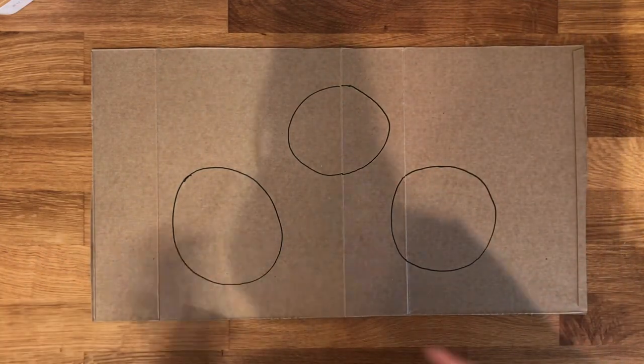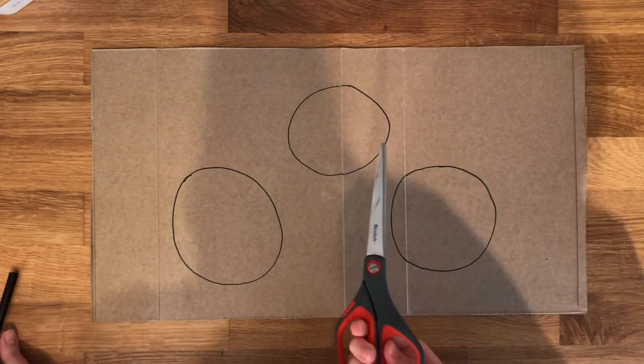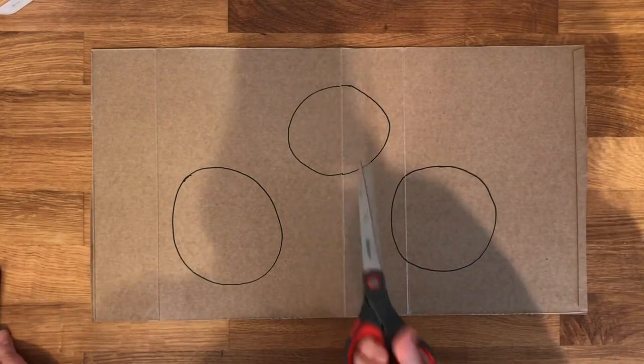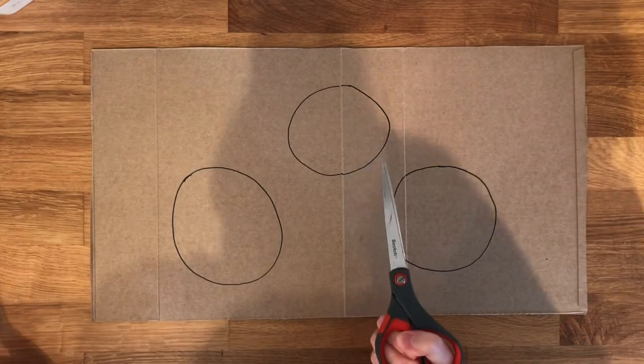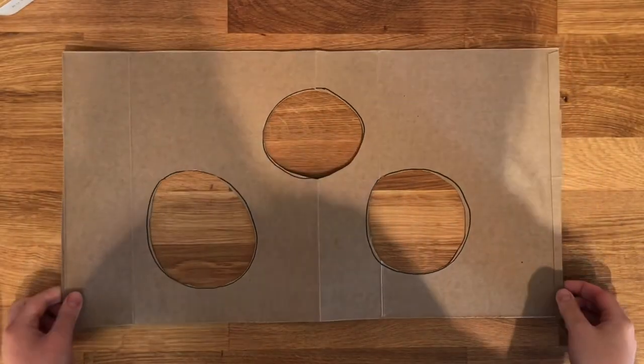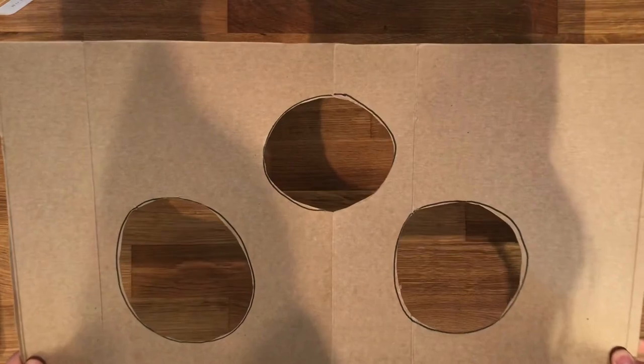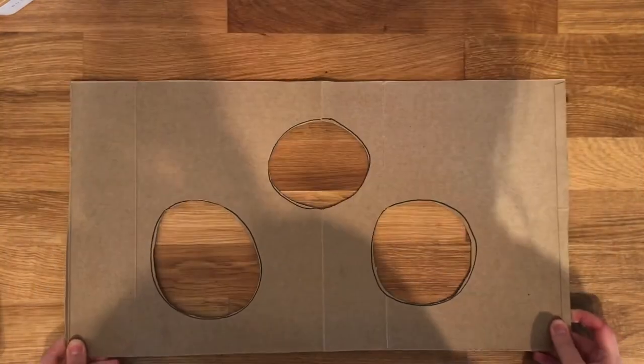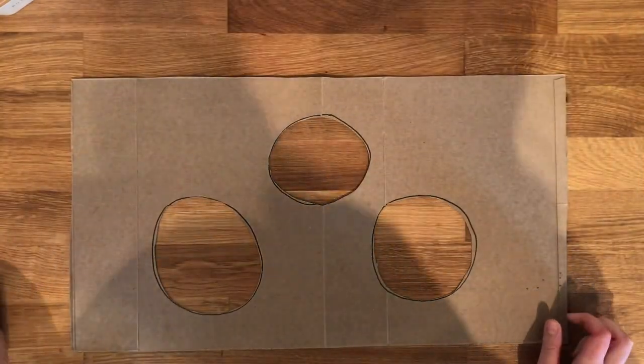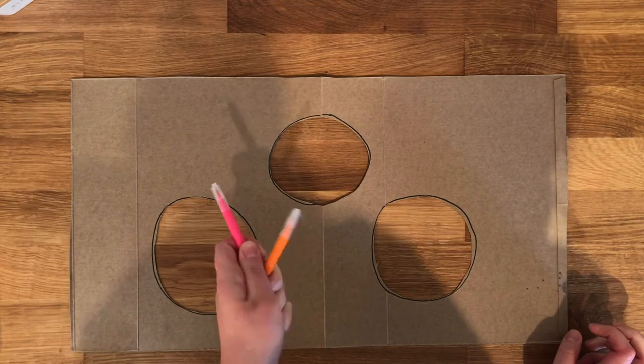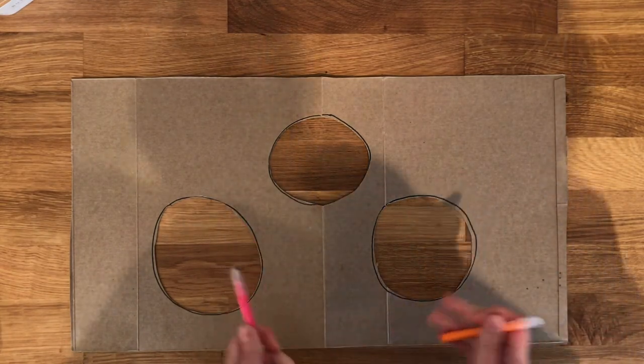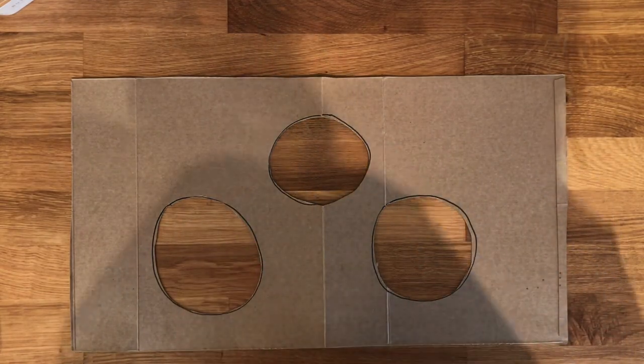So once you've drawn the circles, you can carefully cut them out. You can get a parent to help you with this part if it's a little tough. Now once you've drawn the circles and cut them out, you're ready to decorate. I'm going to be using markers to decorate mine. But you can definitely use paints, colored pencils, or crayons if you would like.